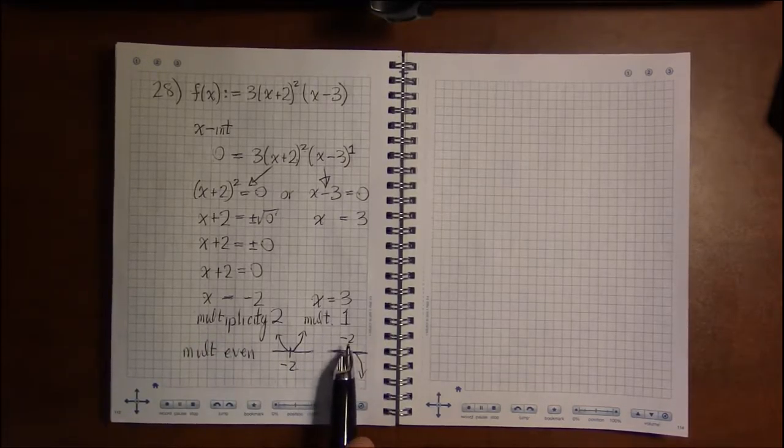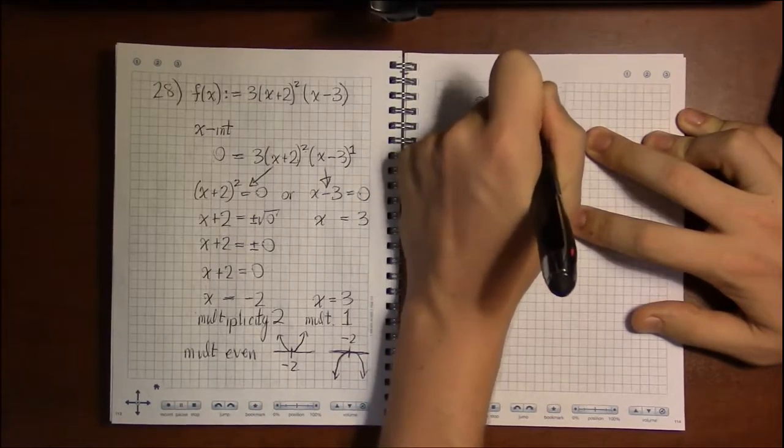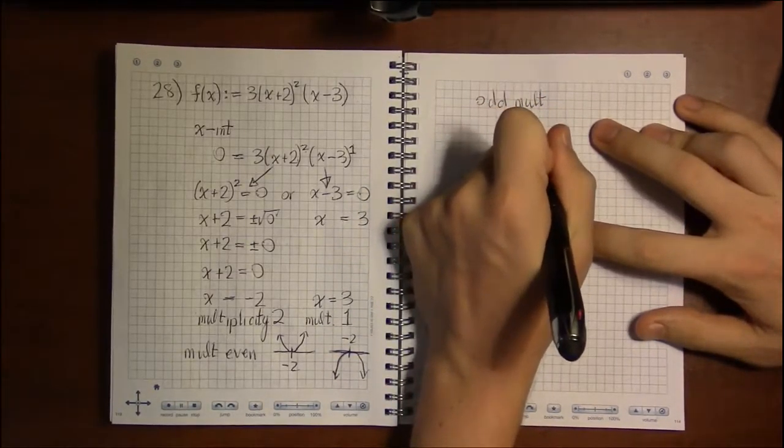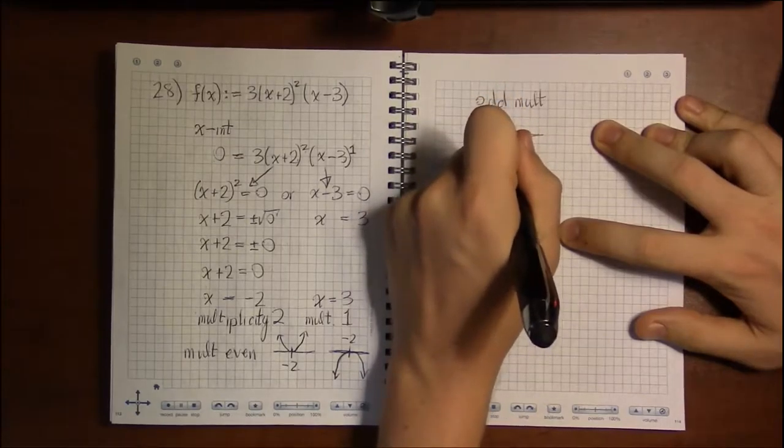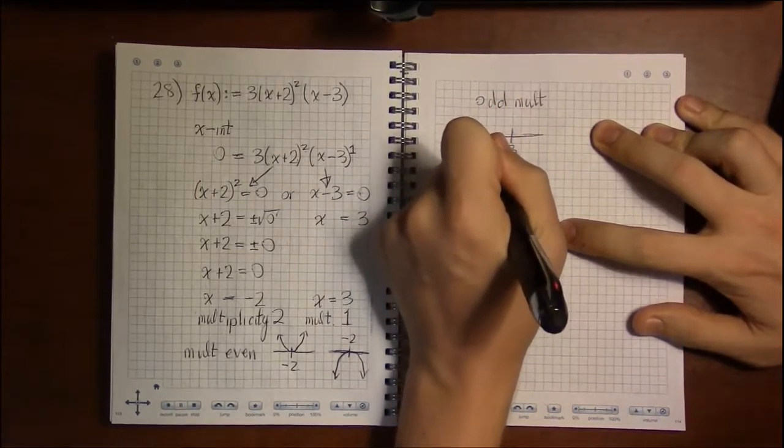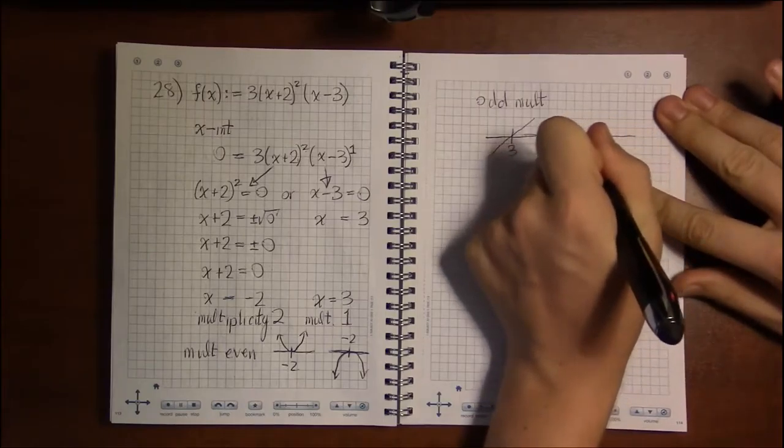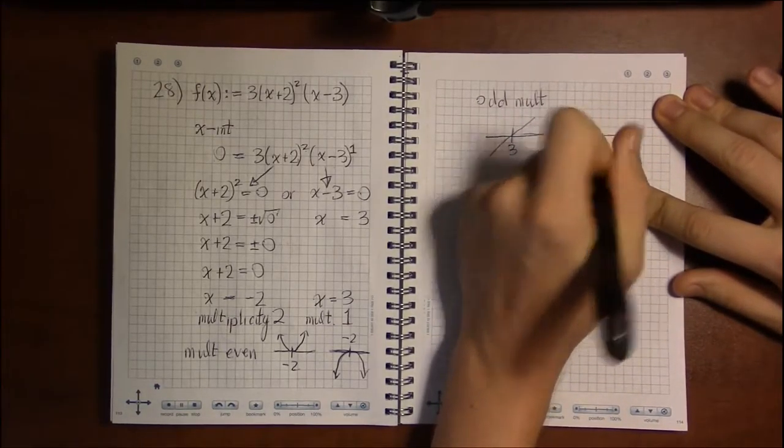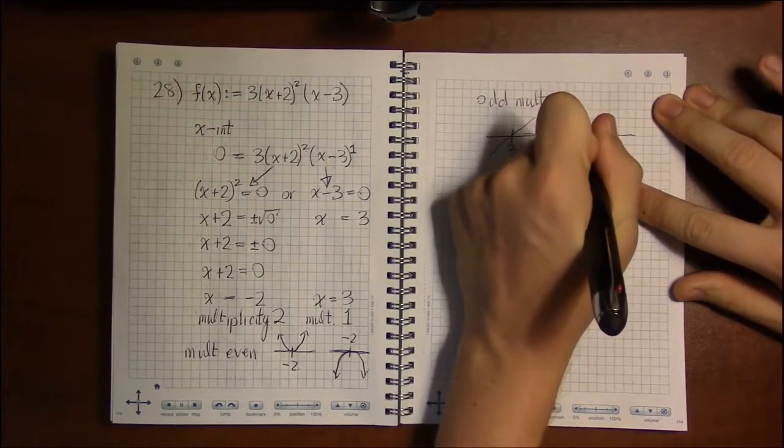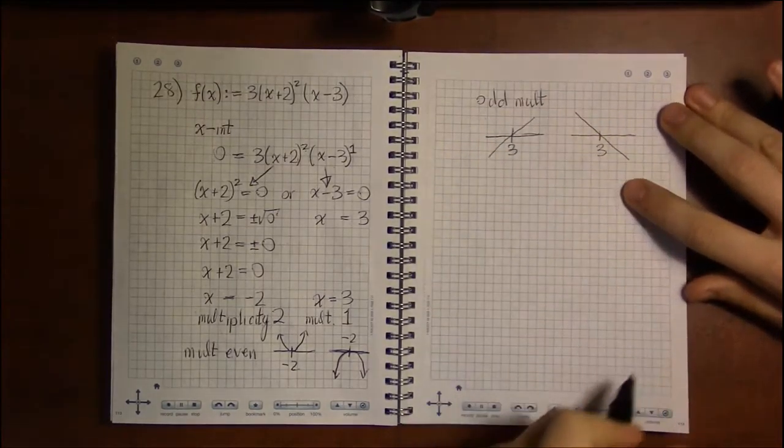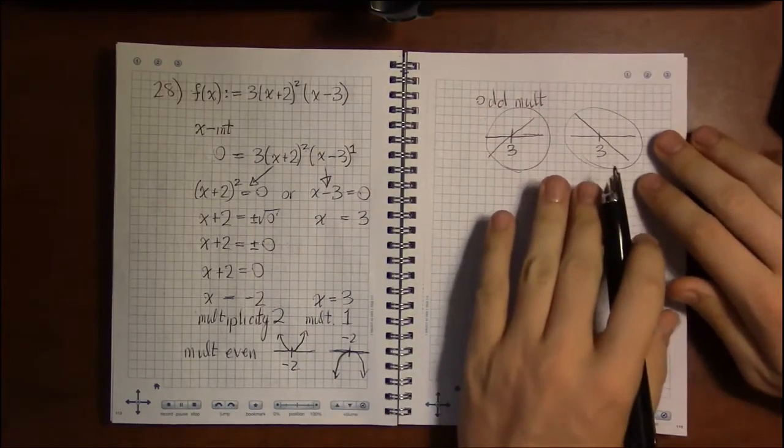Whereas with odd multiplicities, it will cross. So at x = 3, it's either going to cross from below on the left to above on the right, or it could go the other way around. We could be above on the left and below on the right.